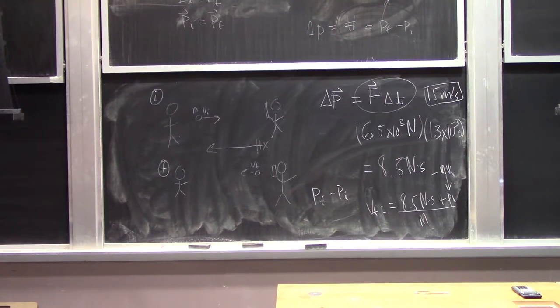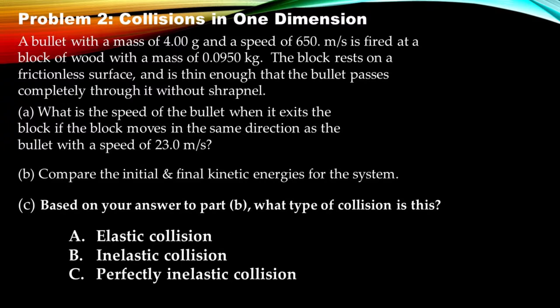The next problem: a bullet with mass 4 grams and speed 650 m/s is fired at a block of wood with mass 0.095 kilograms resting on a frictionless surface. The bullet passes completely through without shrapnel. What is the speed of the bullet when it exits if the block moves in the same direction as the bullet at 23 m/s? Then compare the initial and final kinetic energies and determine what type of collision this is.